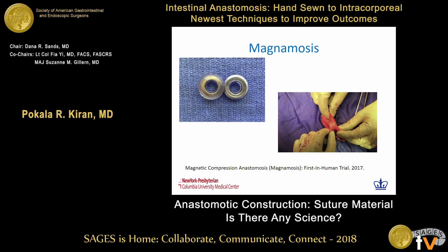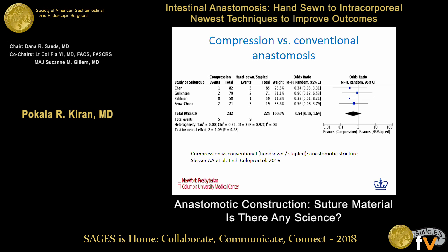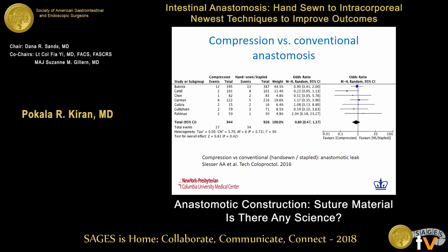Regarding newer techniques, Magnamosis is a magnetic compression device developed in 2017 when the first human trial was performed. It consists of two magnetic rings placed within the lumen of the bowel, and with progressive necrosis, the anastomosis gets created. As seen on the x-ray on the slide, the two magnetic rings are visible at the time of anastomosis, and typically after four to five weeks the rings get extruded and pass out of the gastrointestinal tract. A meta-analysis pooling published studies shows no difference in leak rates or risk for strictures.